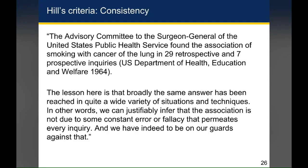The next criterion that Bradford Hill puts forward is that of consistency. The example he gives is the relationship between smoking and lung cancer. Although we can't prove that smoking causes lung cancer, there have been 29 retrospective studies and seven prospective studies that have all looked at this problem, and pretty much every study has found this association to be true. The fact that the association is so consistent across multiple studies effectively rules out the chance that there was a systematic error resulting in this finding. It's much more likely that this association is real simply because so many different types of people have looked at it and found the same thing.